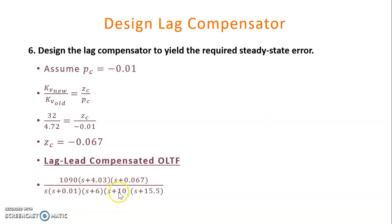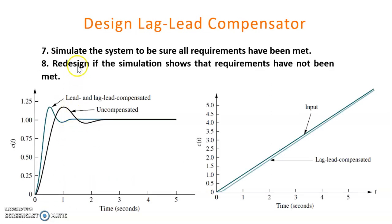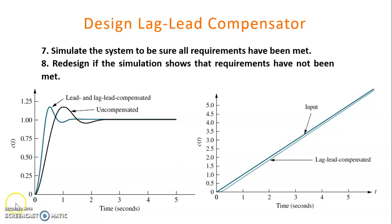Next, we simulate the system to verify all requirements have been met, and redesign if the simulation shows requirements have not been met. The black response is the uncompensated system, and the green one is the lead-lag compensated system. This shows that by implementing the lag-lead compensator, there is improvement in transient response in terms of peak time and settling time. It also shows improvement based on the ramp input for the type 1 system in terms of steady state error. That concludes the design of the lag-lead compensator. Thank you.